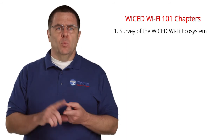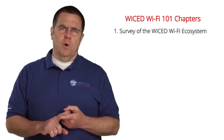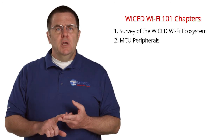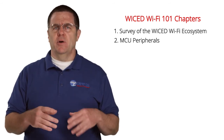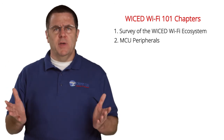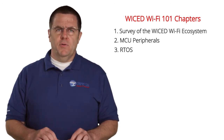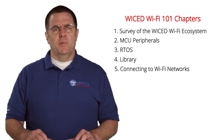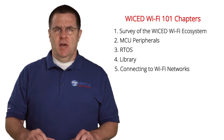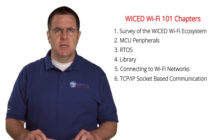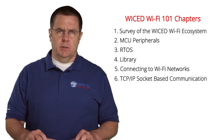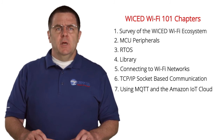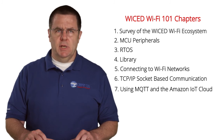This class has seven chapters, which I will turn into the 40-ish videos. The seven chapters are: number one, a survey of the Wicked Wi-Fi ecosystem; number two, using MCU peripherals like the GPIOs, the I2C, PWMs, and all the other peripherals; number three, using the Wicked RTOS; number four, the Wicked library; number five, making connections to Wi-Fi networks; number six, TCP/IP socket-based communication; and finally, number seven, using MQTT in the Amazon IoT cloud.